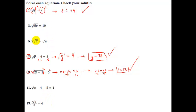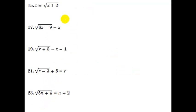I think you get the idea for these basic ones: work backwards, isolate the square root, square both sides, and then keep working until you get the number by itself. Notice how all of these, when you plug them back in, they worked no problem. That's because you have only numbers on the other side of the equation — there were no variables. So, we're going to step it up a little bit in difficulty. Now, we're going to have variables on both sides.